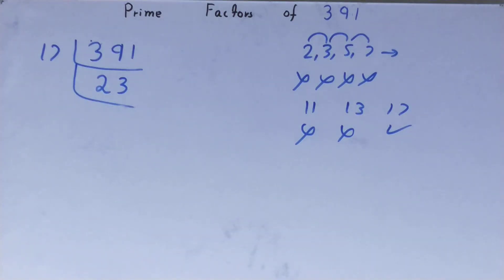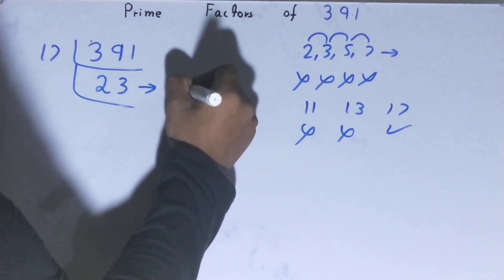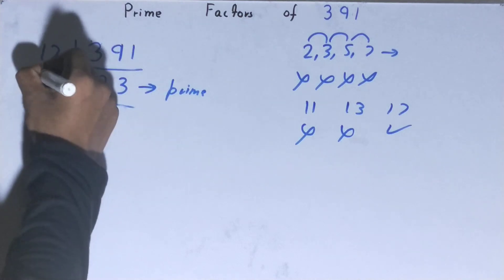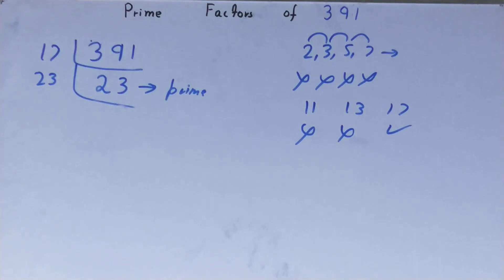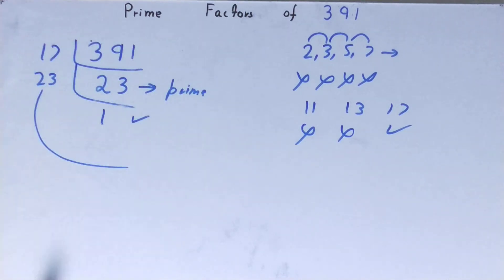This 23 is further not divisible by 17 because 23 is itself prime. So to divide this 23, you need 23 on the left-hand side, and when you will do so, you will be left with one. And once you're left with one, the work is done.